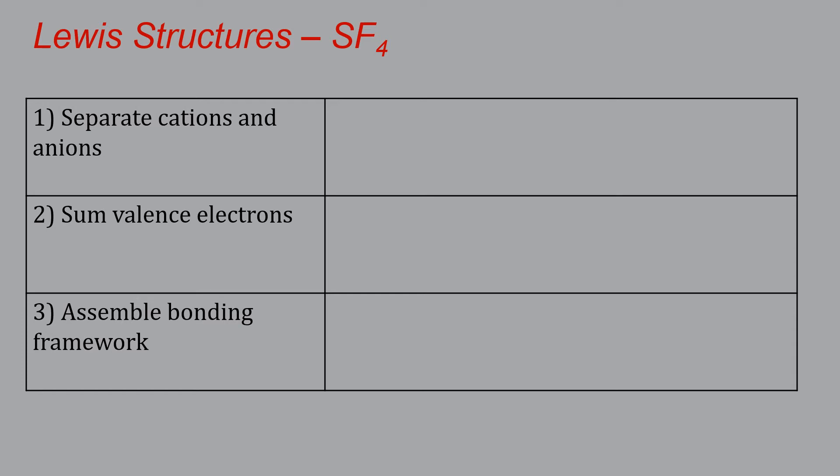Okay, so here's the second example that would have been on the group activity, and that is sulfur tetrafluoride. So I'm going to go through the steps here. First off, separate the anions and cations. This is an intact covalent compound, so we don't need to worry about that.